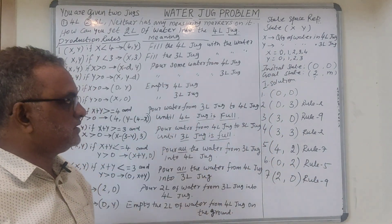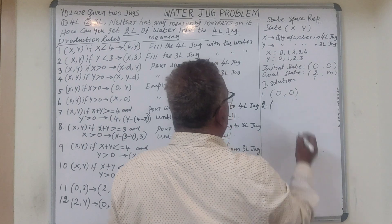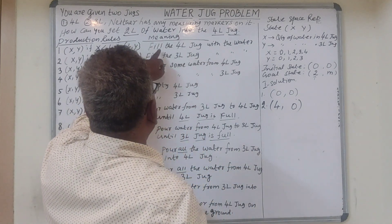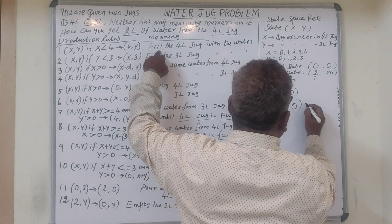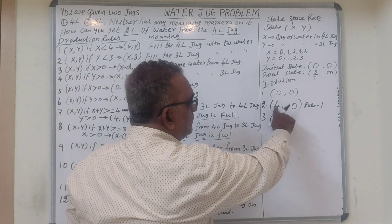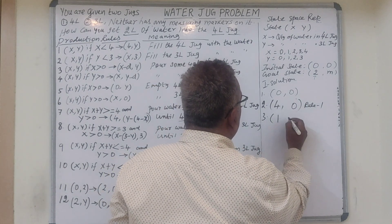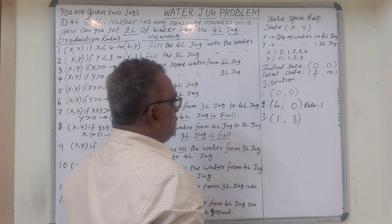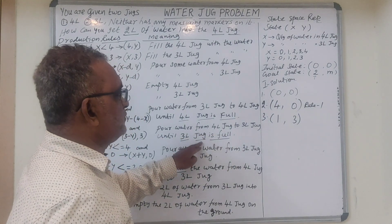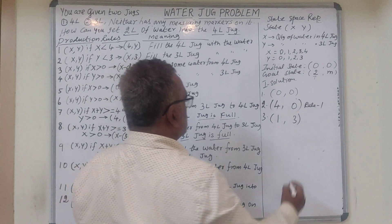I hope you understand this solution. Now let us see the second solution. The initial state is (0, 0). We fill up the 4-litre jug — rule number 1 — giving (4, 0). Then we pour water from the 4-litre jug into the 3-litre jug until the 3-litre jug is full — rule number 8 — giving state (1, 3). Next, we empty the 3-litre jug — rule number 6 — giving (1, 0).